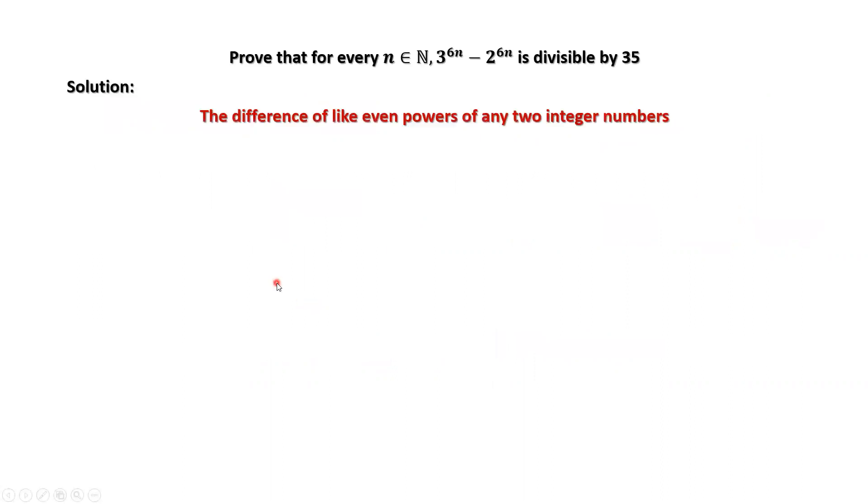Here we use this important result: The difference of like even powers of any two integer numbers is divisible by the sum of the bases. a to the power 2n minus b to the power 2n.